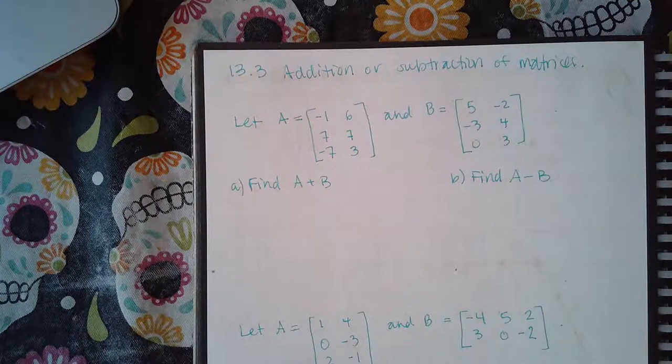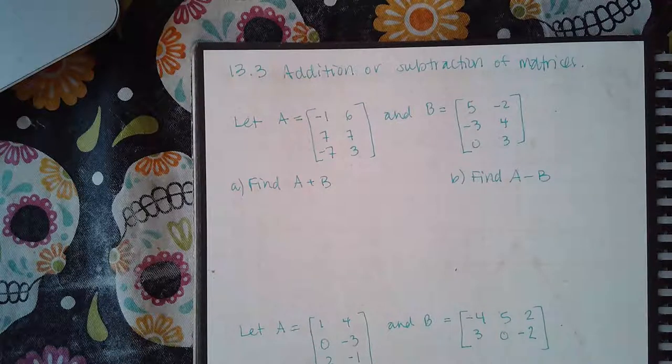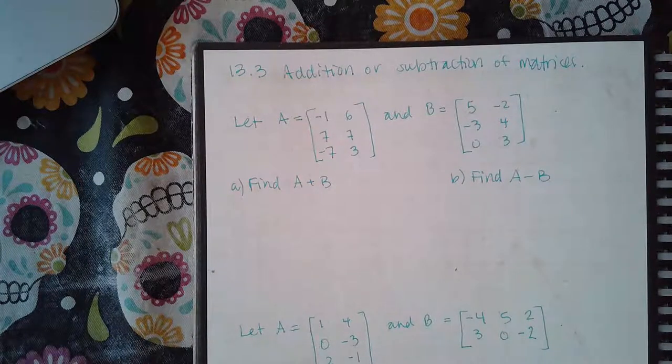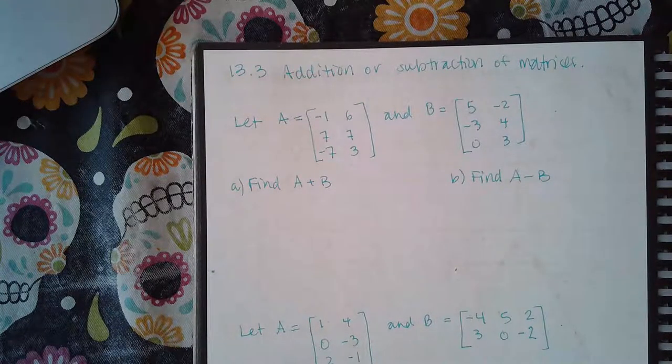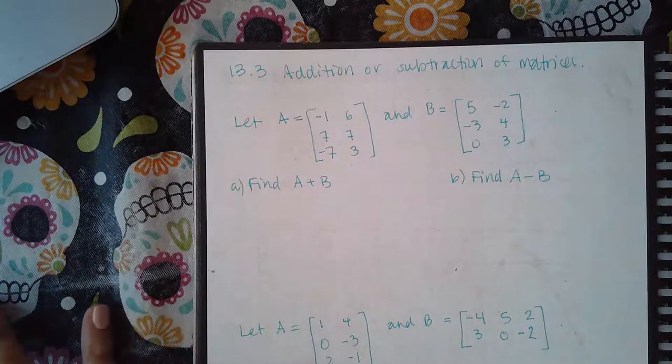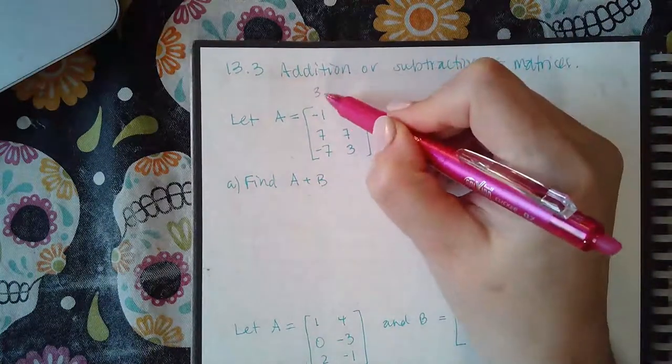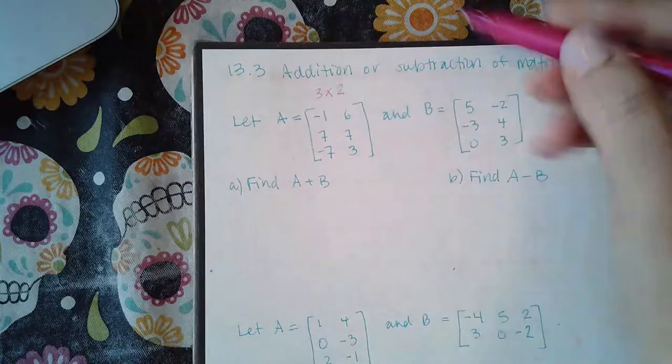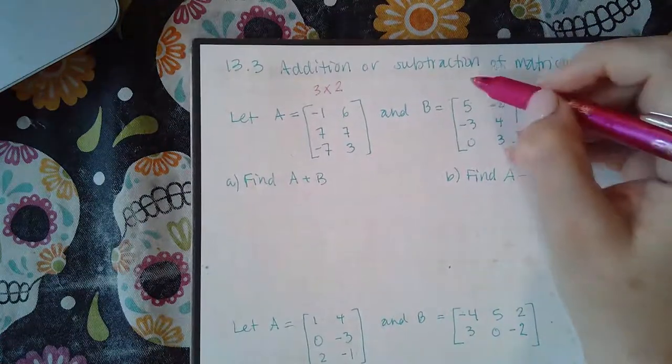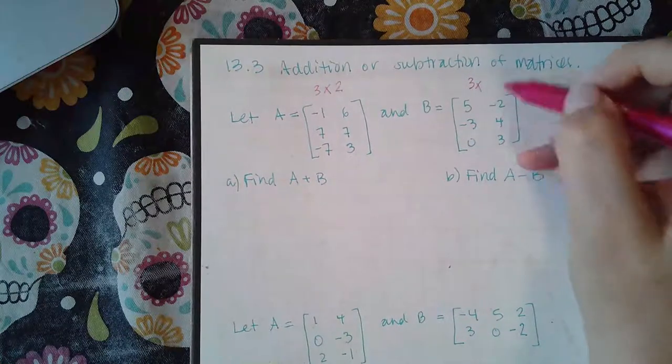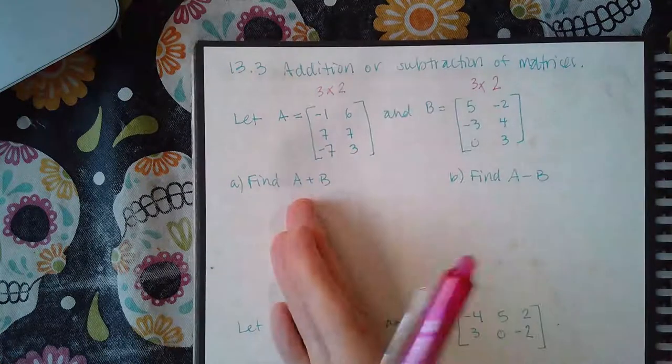Now, for this topic, addition or subtraction of matrices, you can only add or subtract matrices that have the same dimensions. How many rows does this have? It has three rows and two columns. This one has three rows and two columns. Always the rows first, and then the columns.